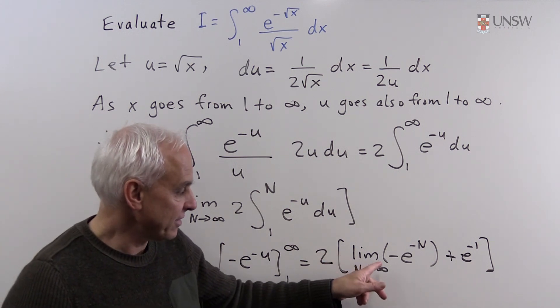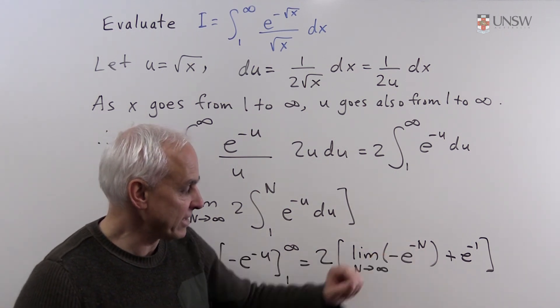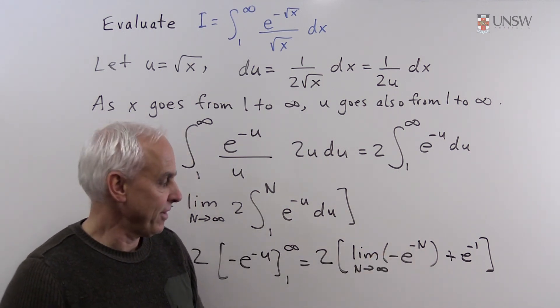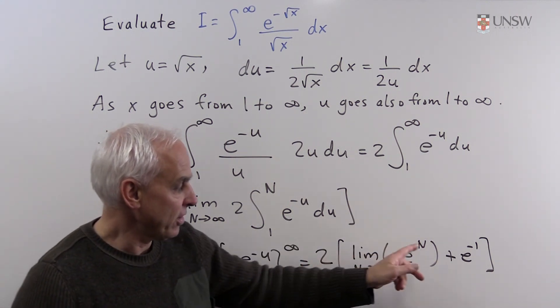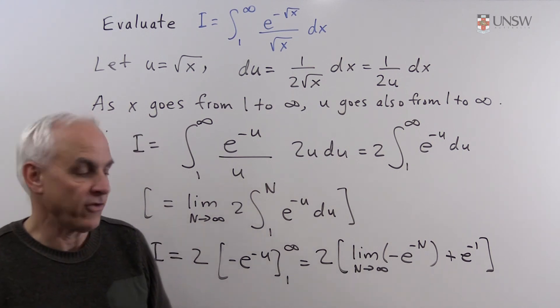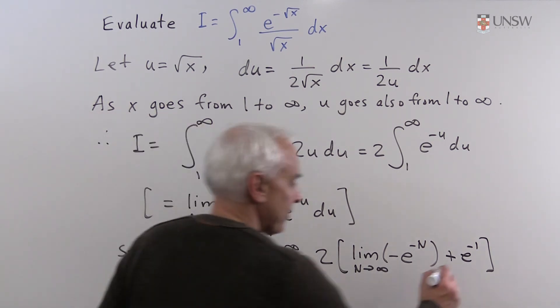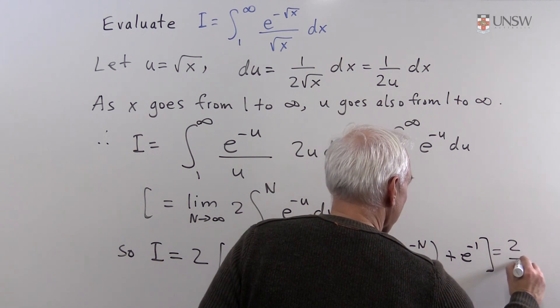And what is the limit as N goes to infinity of e to the minus N? That's zero. So this first term will be zero, and we'll just get two times e to the minus one. So our answer is two over e. Thank you.